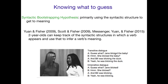Here's a sample transitive dialogue used to figure out what the novel word 'blick' means. 'Guess what? Jane blicked the baby.' 'Hmm, she blicked the baby?' 'Yeah, and Bill was blicking the duck.' 'Yeah, he was blicking the duck.' So 'blick' is a transitive word — it would mean something like kissing or hugging.